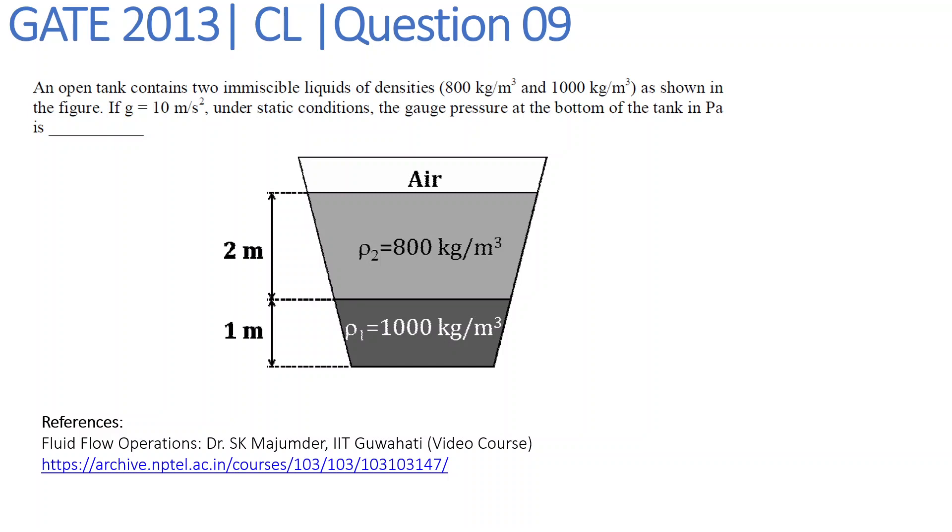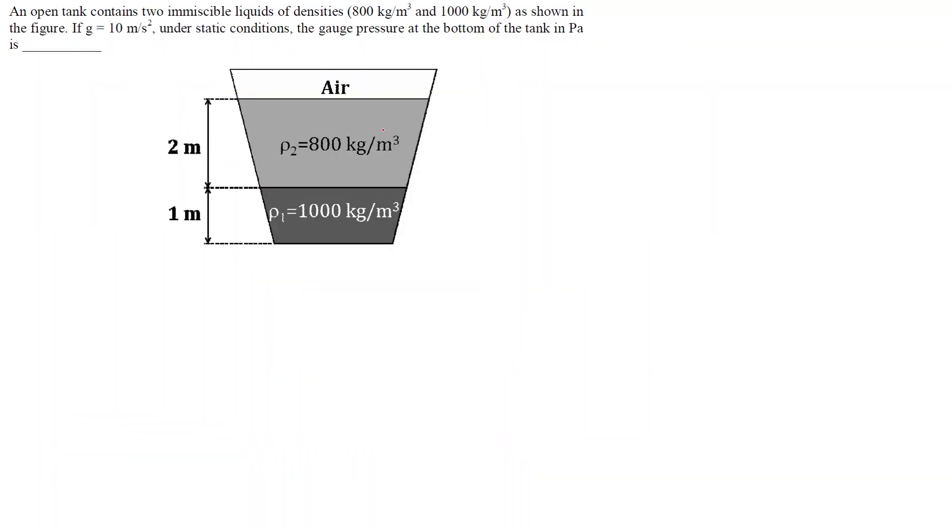Over here we have been given a tank in which we are having two fluids. The first fluid or the bottom fluid has the density ρ₁ of 1000 kg per meter cube and it is filled up to one meter. The second fluid has a density of 800 kg per meter cube and it has a total height of two meters.